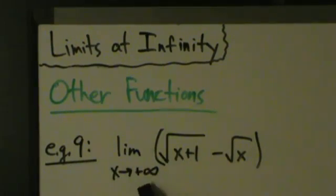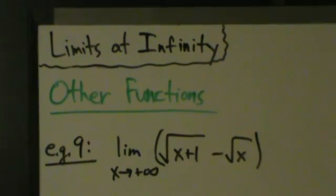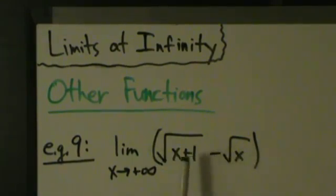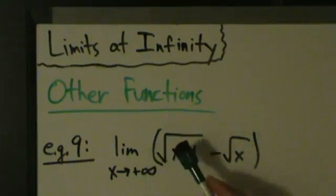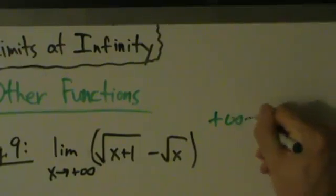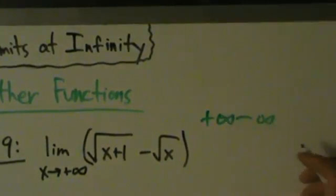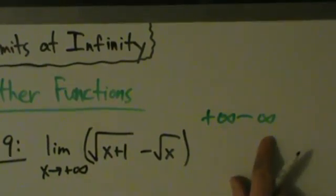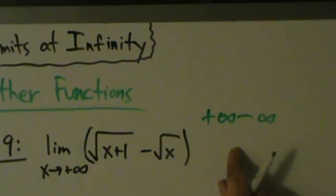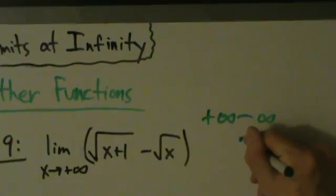Example 9: the limit as x goes to positive infinity of √(x+1) − √x. Remember, if you're taking a limit at positive or negative infinity, there's really no concept of direct substitution, but you can just imagine what happens as x gets really super huge. As x goes to positive infinity, x+1 also goes to infinity, and so does its square root. Same with √x. So this is behaving like positive infinity minus infinity — but that's actually bad, because this is undefined. Infinity is not a real number; infinity minus infinity is not necessarily 0. It could be any real number, or even still infinity.